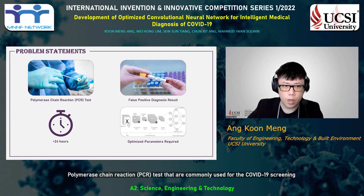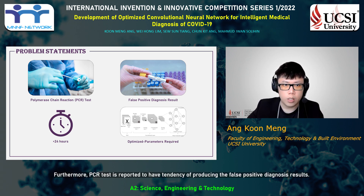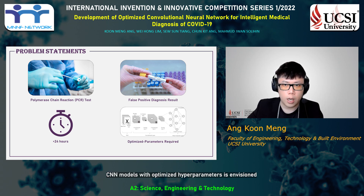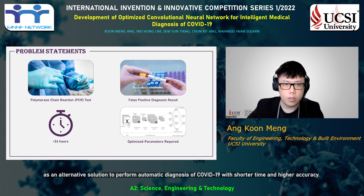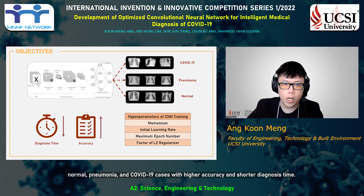Polymerase Chain Reaction (PCR) tests commonly used for COVID-19 screening require more than 24 hours to receive a diagnosis result. Furthermore, PCR tests are reported to have a tendency of producing false positive diagnosis results. CNN models with optimized hyperparameters are envisioned as an alternative solution to perform automatic diagnosis of COVID-19 with shorter time and higher accuracy. In this study, we propose an SSO-optimized CNN model that can classify CXR images of patients into normal, pneumonia, and COVID-19 cases with higher accuracy and shorter diagnosis time.